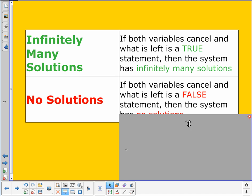On the flip side, if both of our variables cancel out and what's left is false, then the system has no solution. In that case, we'll end up with something that looks like 0 equals 5. Well, we know that 0 doesn't equal 5. That's not a true statement. So, that means that that system has no solutions. So, that's what it looks like algebraically. If both variables cancel out, we have to look at what's left. Is it true? That's infinitely many. Is it false? That means no solution.